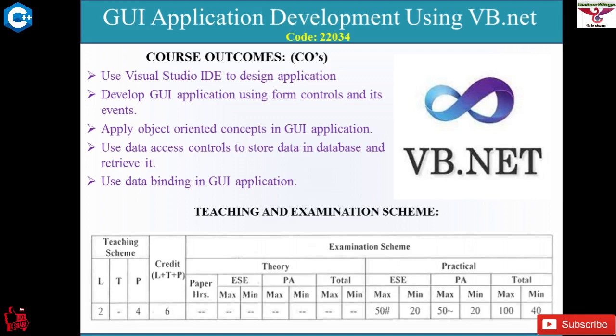Next is the teaching and examination scheme. This is not a theory subject, so there is no theory paper. Only the practical approach is assessed. Practical has two parts: external and internal assessment. External practical is 50 marks — you need minimum 20 marks — and internal is also 50 marks, making a total of 100 marks, all based on practical performance.